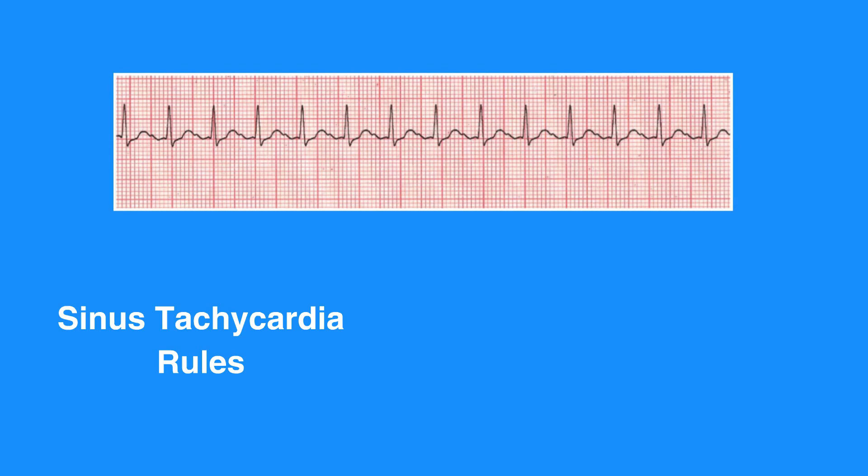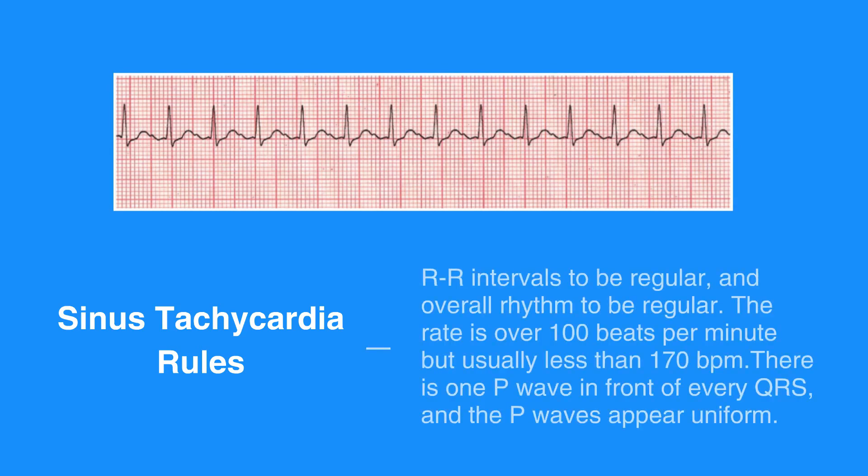The sinus tachycardia rules include R-R intervals to be regular and overall rhythm to be regular. The rate is over 100 beats per minute, but usually less than 170 beats per minute. There is one P wave in front of every QRS, and the P waves appear uniform.